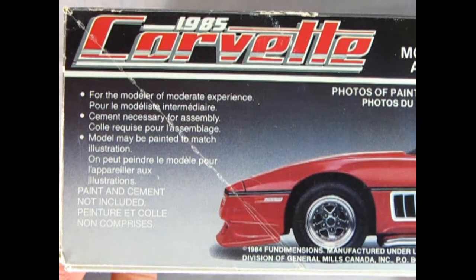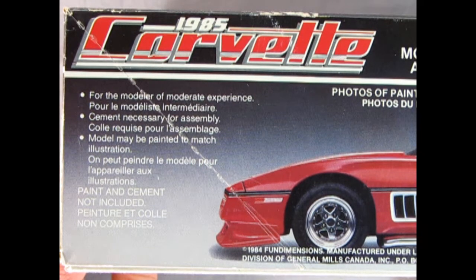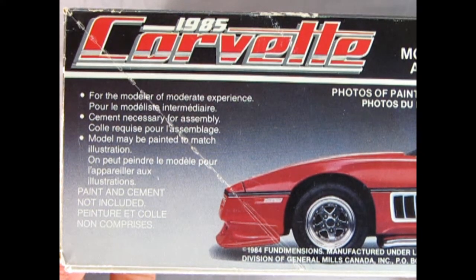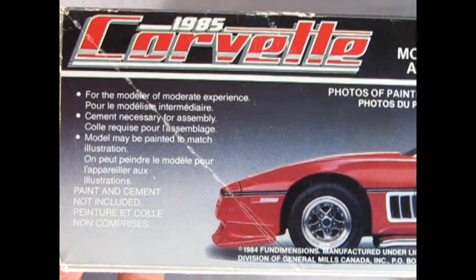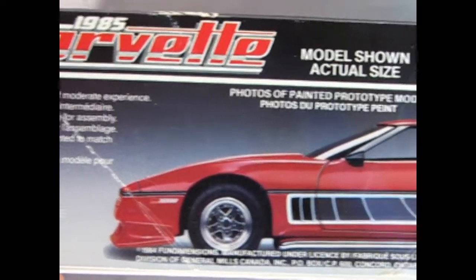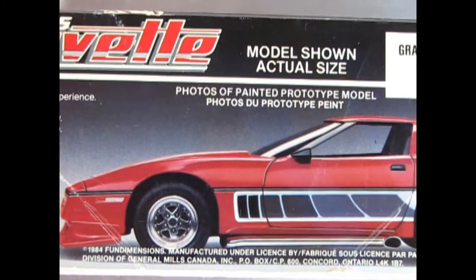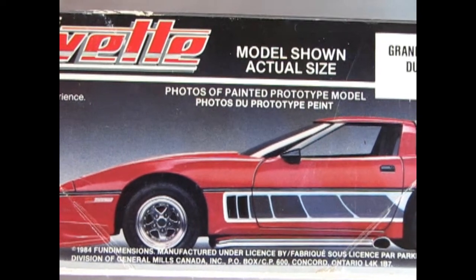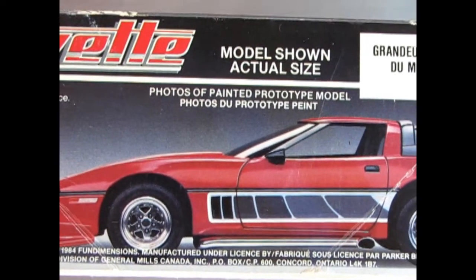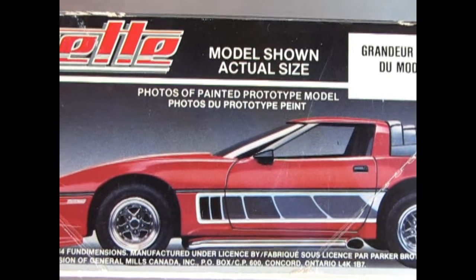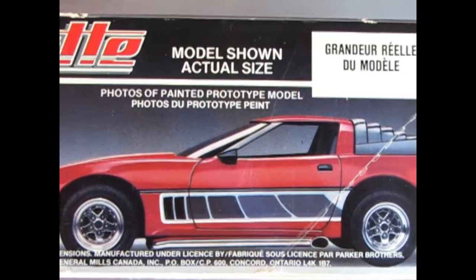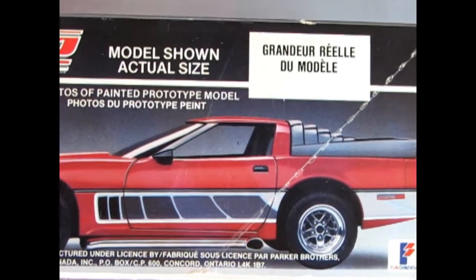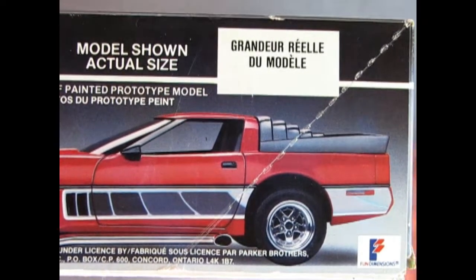This model kit was for the modeler of moderate experience. Cement is necessary for assembly. Model may be painted to match the illustration. Paint and cement is not included. And as we drive this car more into frame, this is the model shown in its actual size, photos of painted prototype model. This is from 1984 Fun Dimensions but it's an 85 Corvette. There's that great old Fun Dimensions logo.